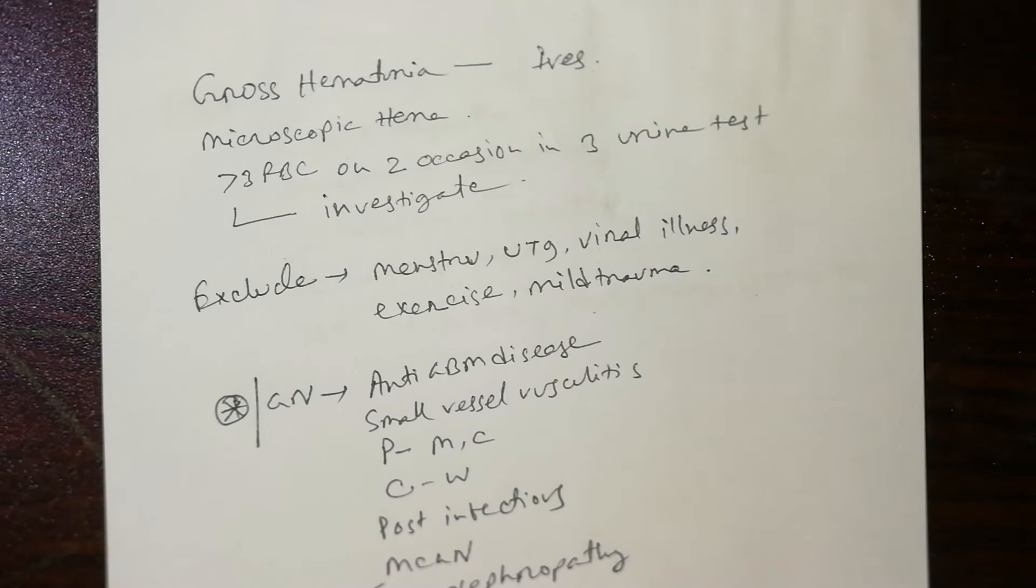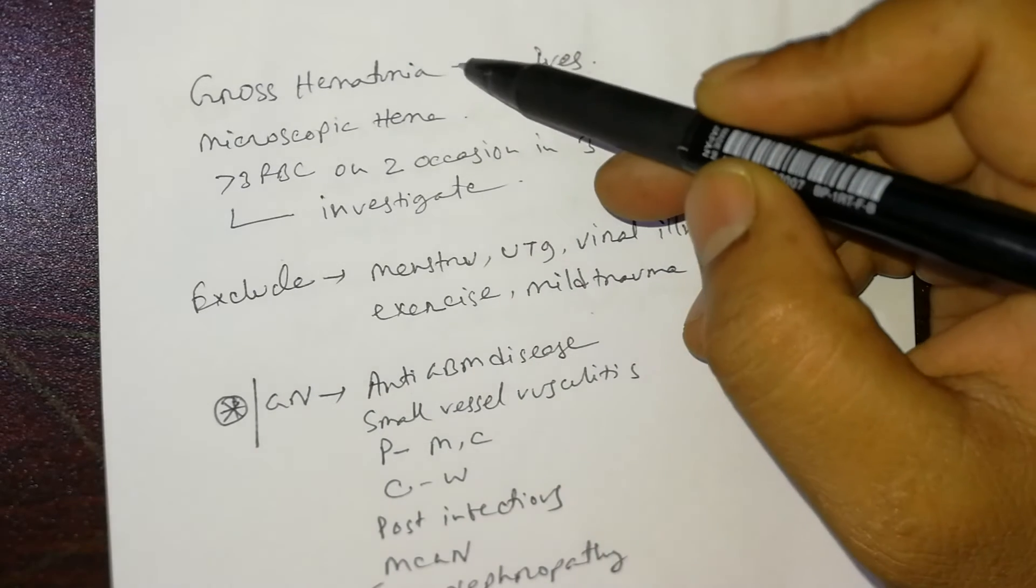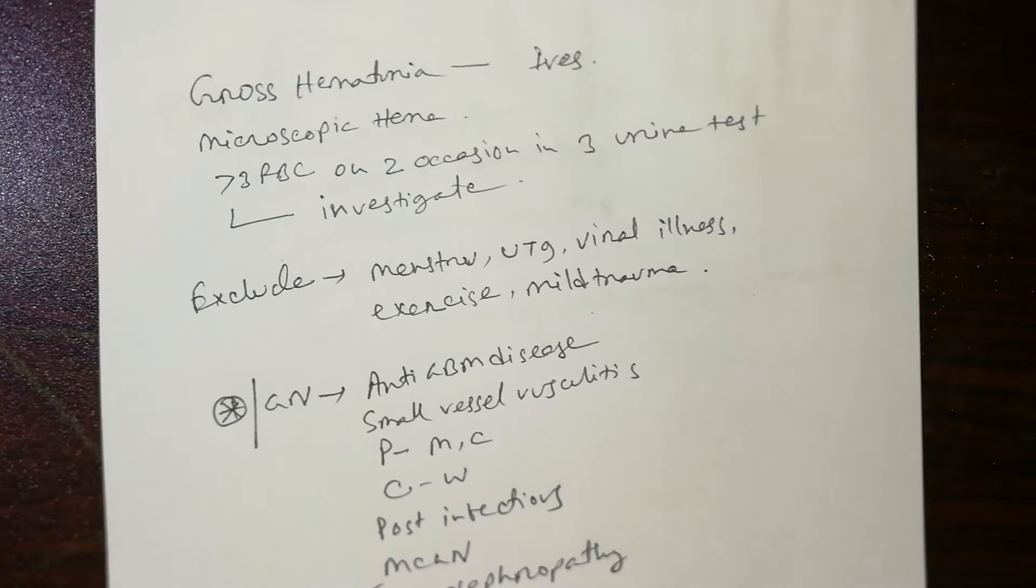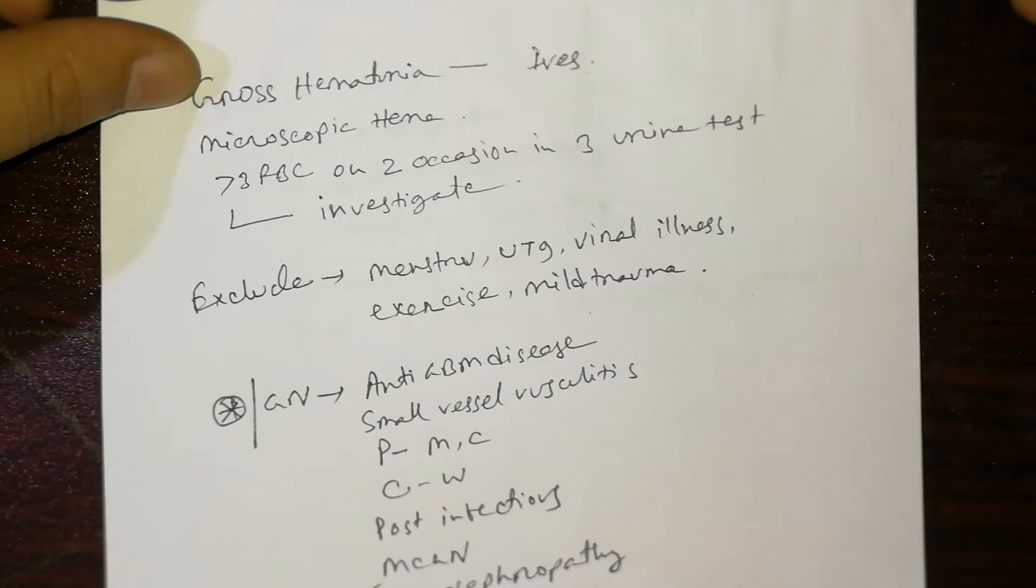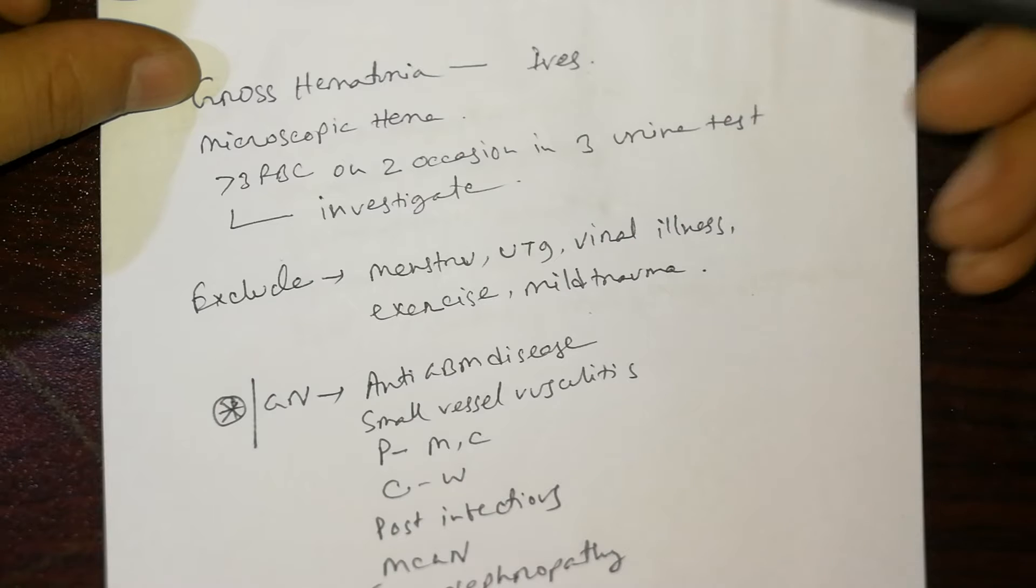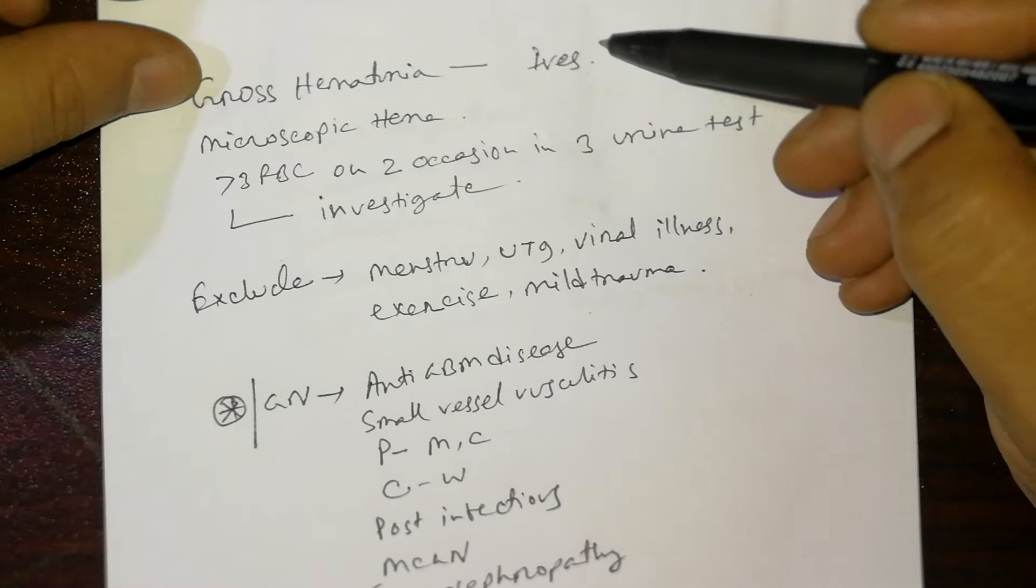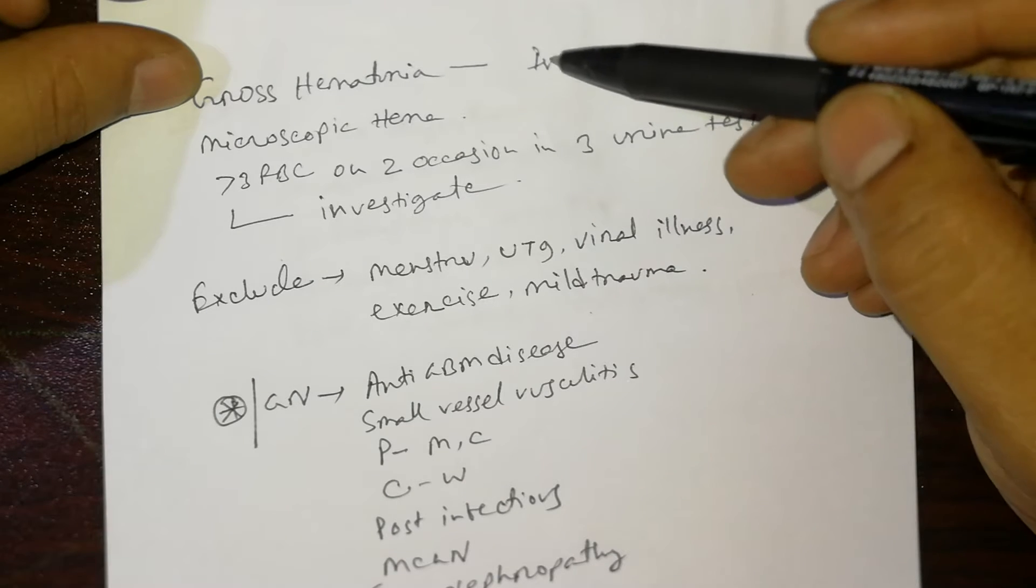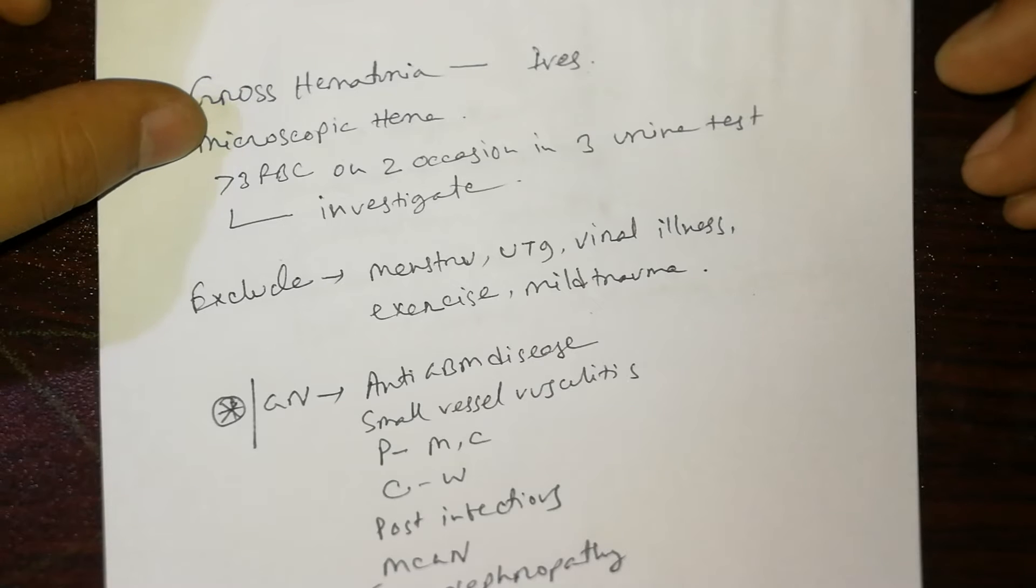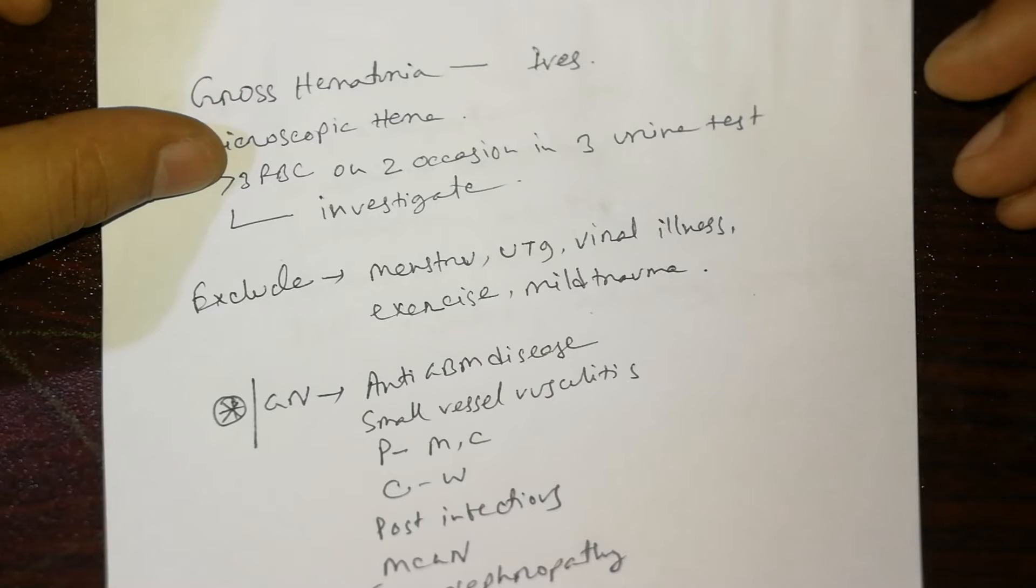When a person has hematuria, if it is gross hematuria the urine looks like coca-cola or mustard oil, you do investigation because it obviously has an underlying pathology. But in microscopic hematuria, such as more than three RBCs per high power field, you investigate.